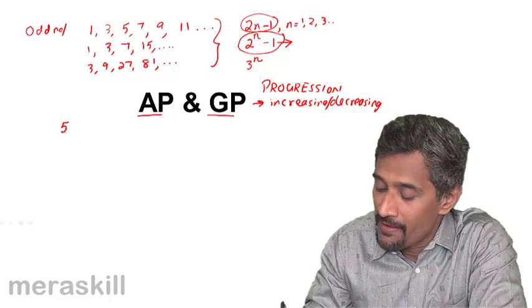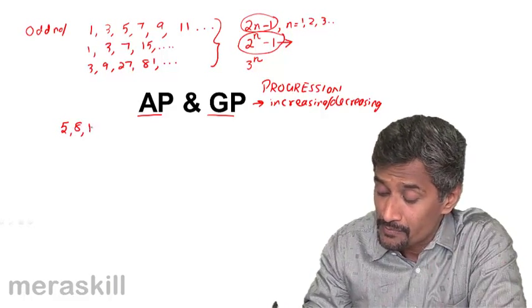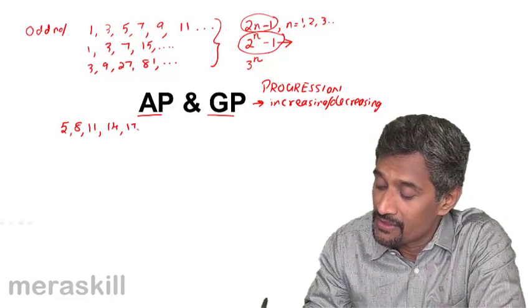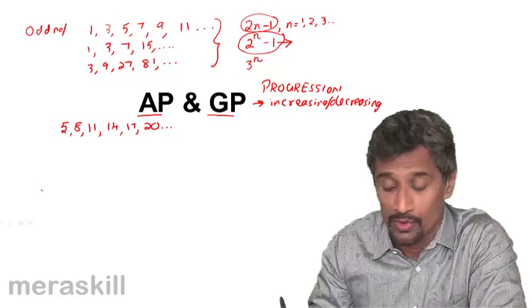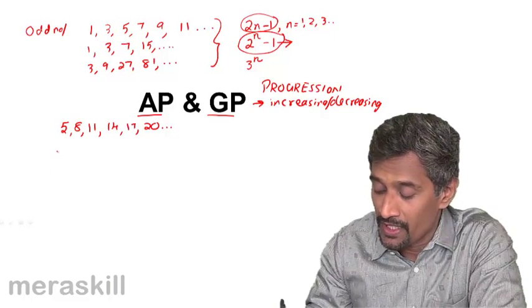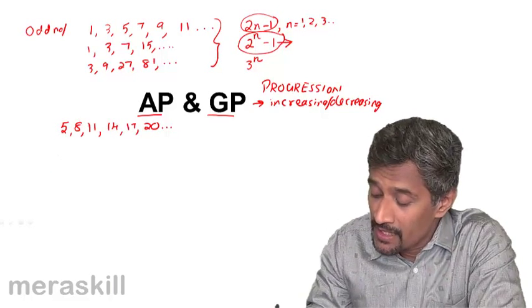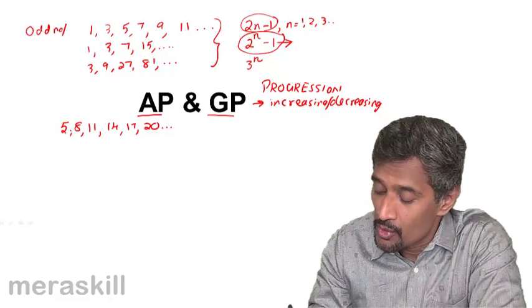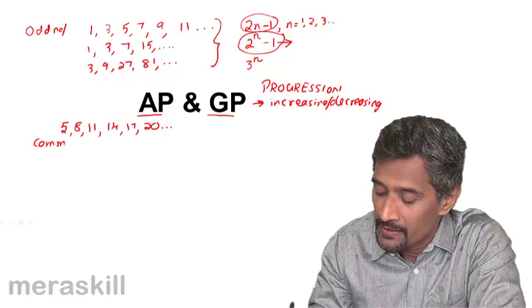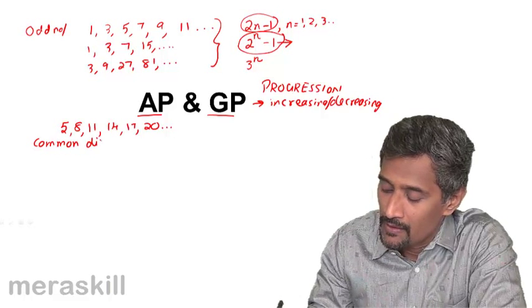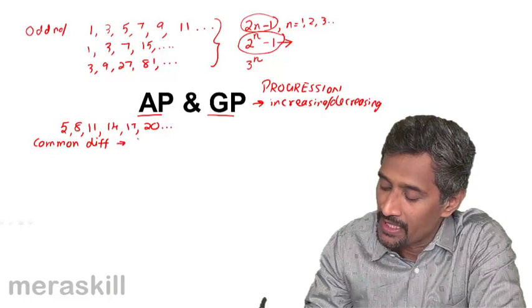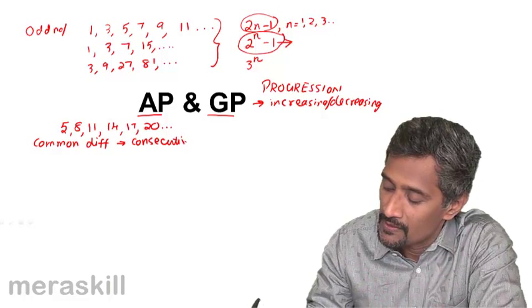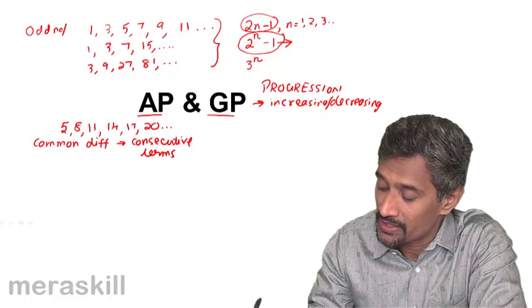Say you have 5, 8, 11, 14, 17, 20, and so on and so forth. If you observe over here, every number is 3 more than the previous one. So there is a common difference that exists between consecutive terms. So then we call it as an arithmetic progression.